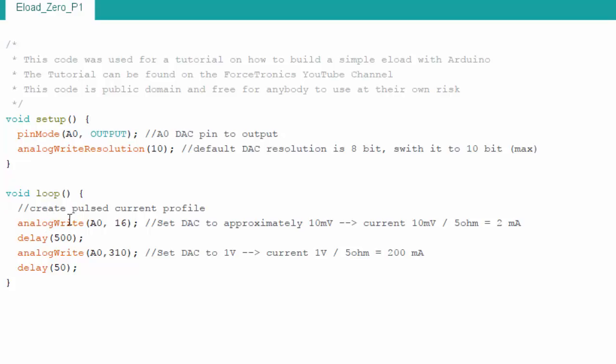Then I just loop and what I do in the loop is first I write the DAC value to 16 which essentially equals about 2 milliamps of current and about 10 millivolts of voltage drop across the 5 ohm resistor. I delay for 500 milliseconds and then I do another analog write for 310 which is essentially 1 volt which will be 200 milliamps through the 5 ohm resistor and then I delay for just 50 milliseconds. What I'm trying to do here is just simulate a basic circuit that maybe is turning off and then turning on to transmit data maybe it's sort of an IoT design.